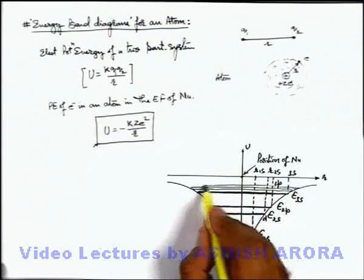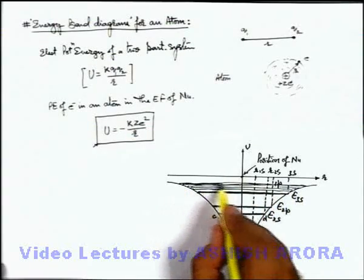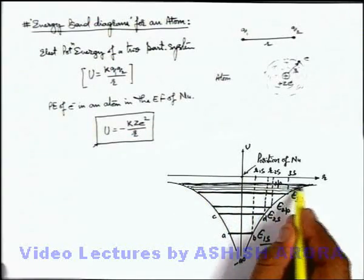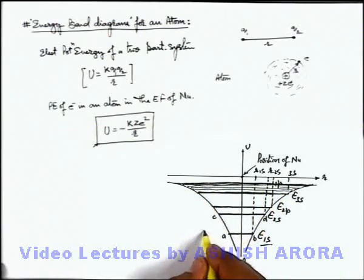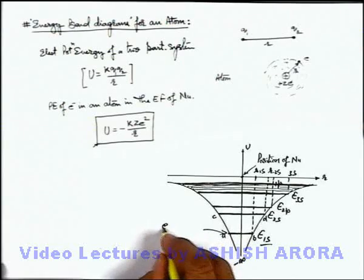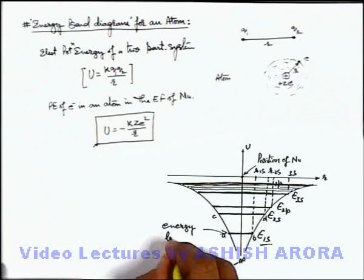And even up to very large distances, the energy levels or orbitals are quite dense. And here we can say this is the energy level for orbital 1s in this diagram.